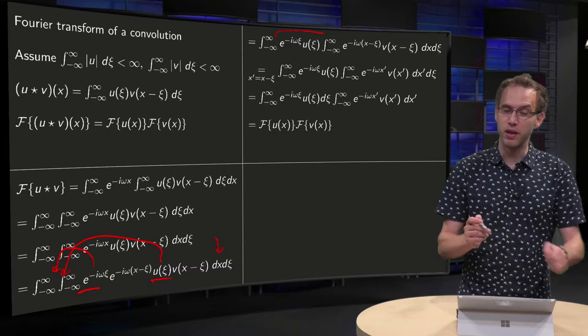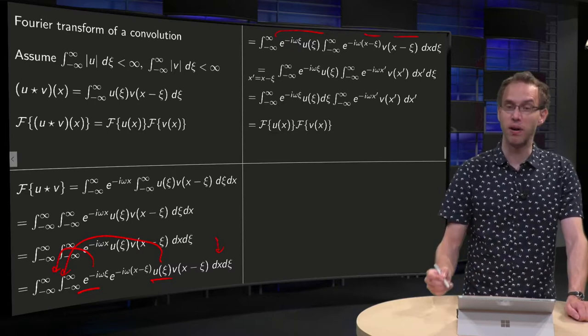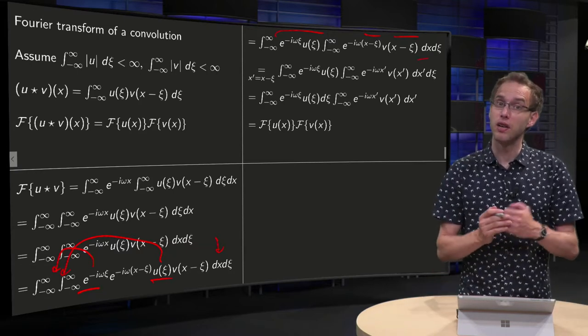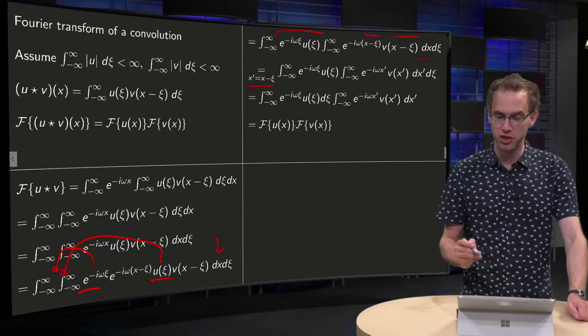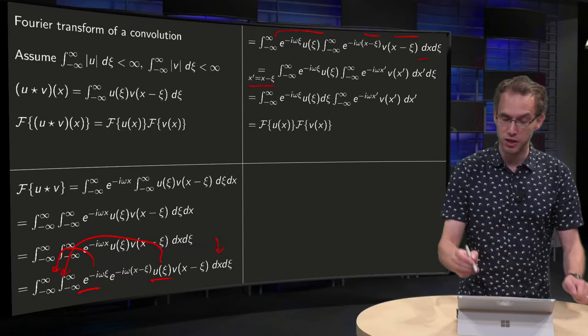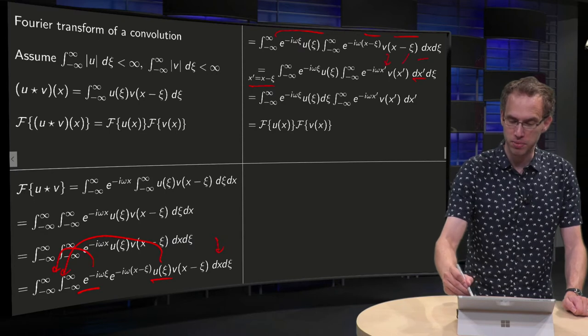And now you see why we did this. Here we only have the variable x minus xi and x minus xi and integrated with respect to x. So we can use a change of variables, x prime equals x minus xi. So dx prime equals dx. So that's over here. And here we get x primes and x primes.